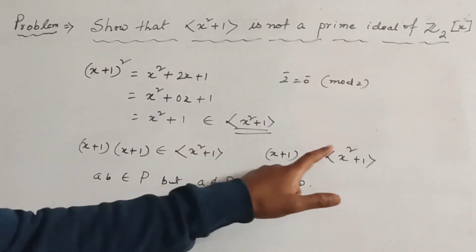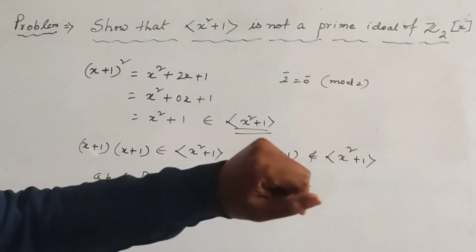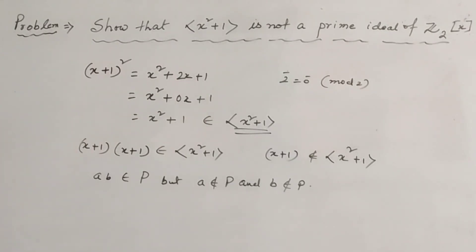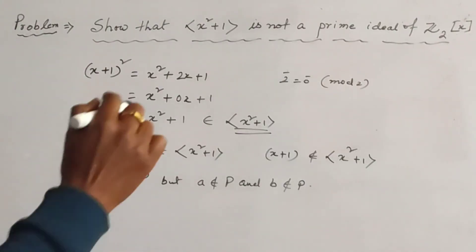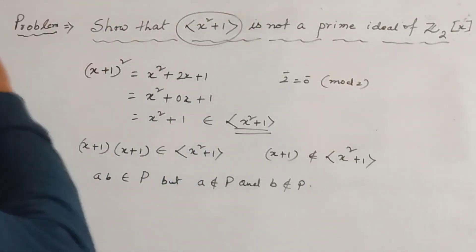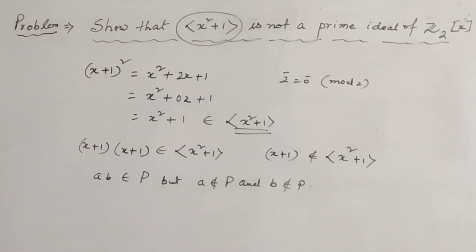If this belongs to ⟨x² + 1⟩, then this is said to be prime ideal. But this does not belong to this ideal. So the given principal ideal is not a prime ideal of Z₂[x].